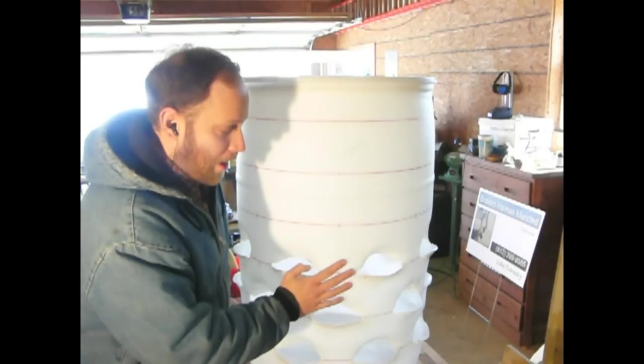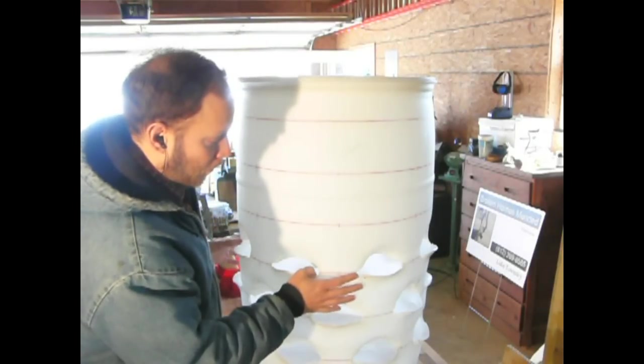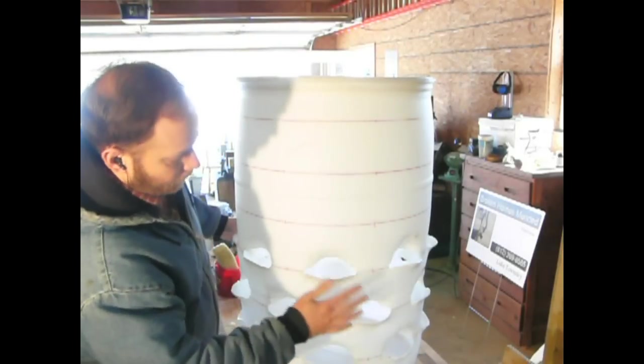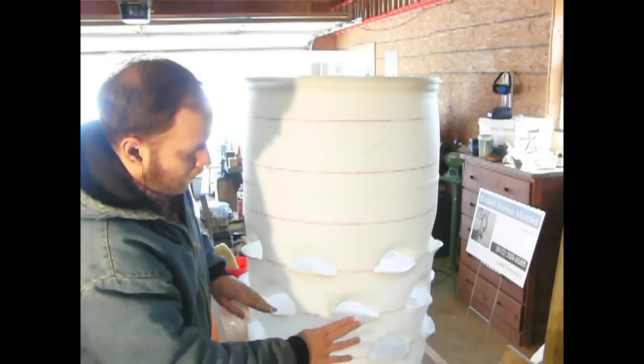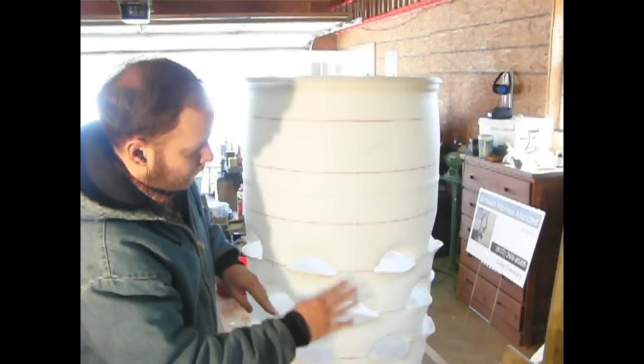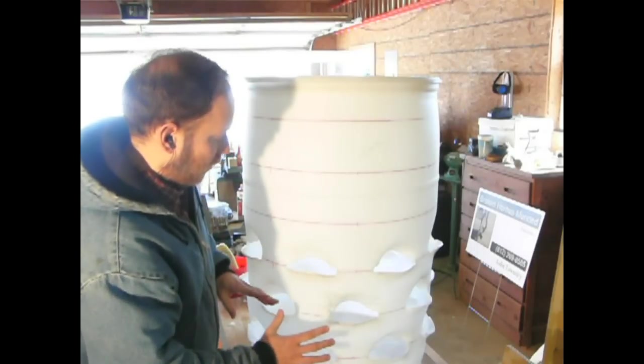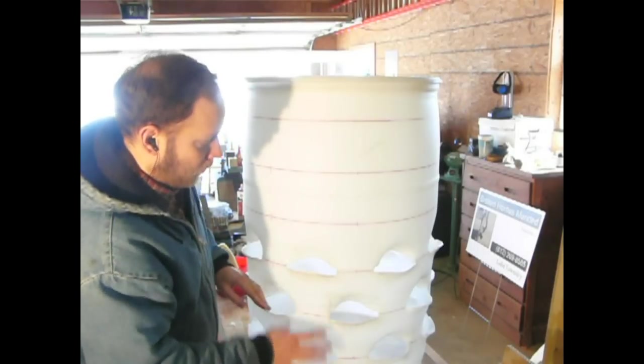Here we've gotten half of this done, half of the pockets cut. Have the bottom three rows, have the top three rows yet left to do. You can see how I'm staggering them. To get more pockets closer together and still keep some strength in the barrel.